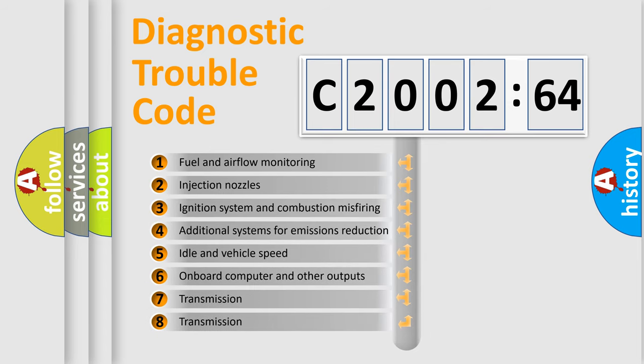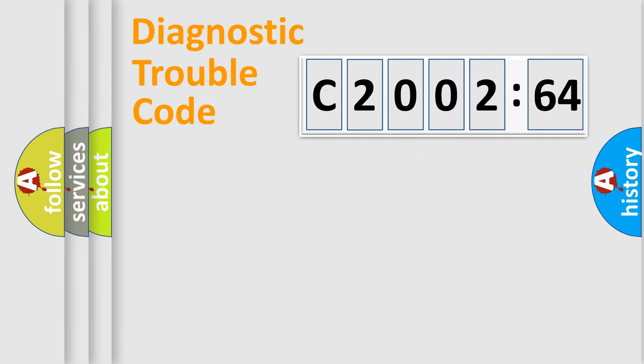The third character specifies a subset of errors. The distribution shown is valid only for the standardized DTC code. Only the last two characters define the specific fault of the group.